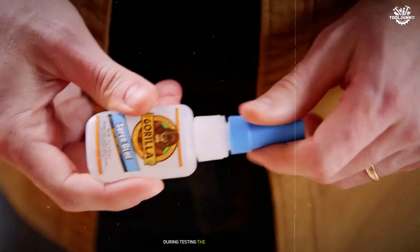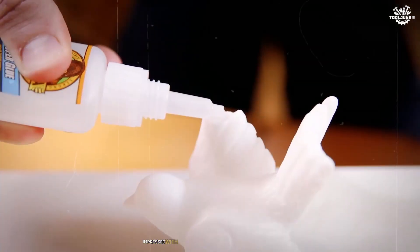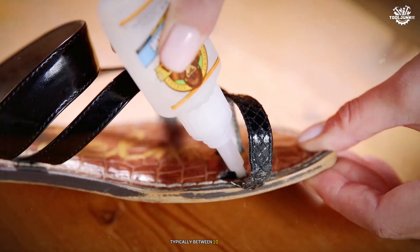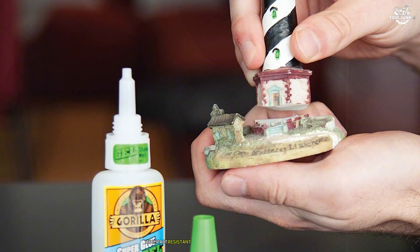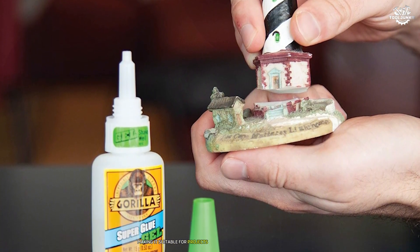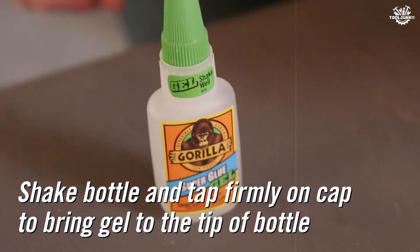During testing, the Gorilla Superglue Gel impressed with its ease of application and quick drying time, typically between 10 to 45 seconds. Its impact-resistant formula adds durability to the bond, making it suitable for projects that require moderate strength.